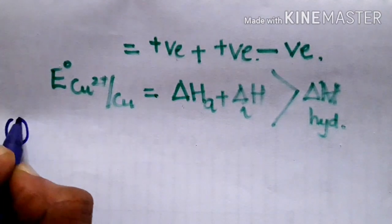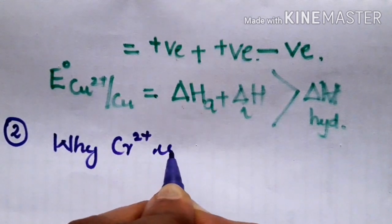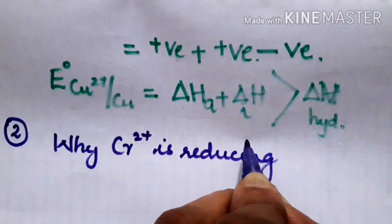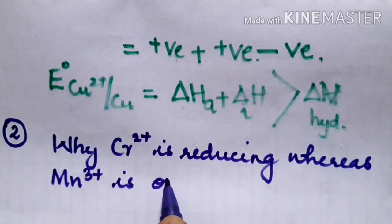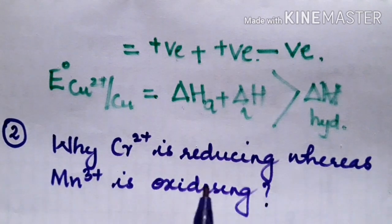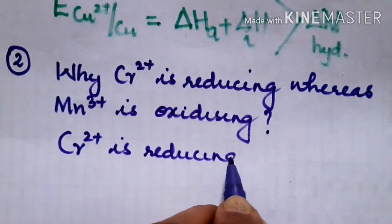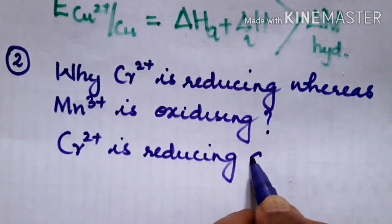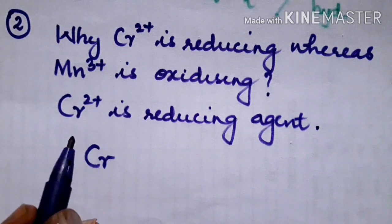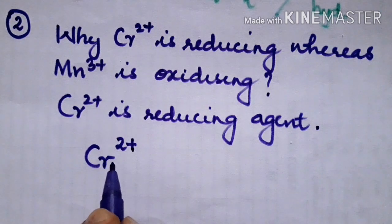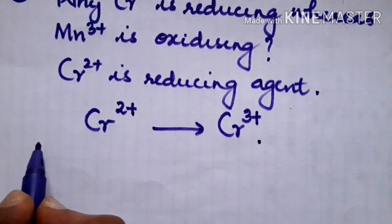The second question: why is Cr²⁺ a reducing agent? A reducing agent helps others undergo reduction while itself getting oxidized. So Cr²⁺ will be converted to Cr³⁺ easily.